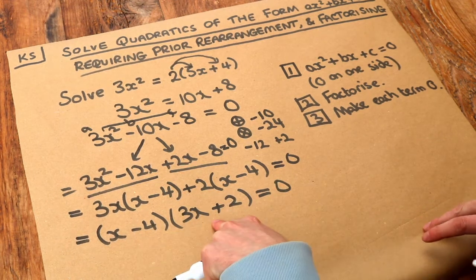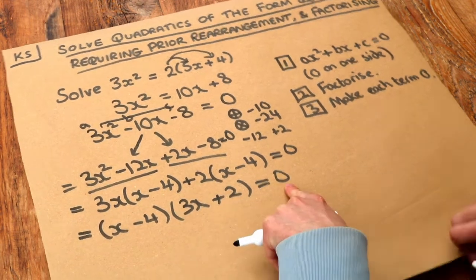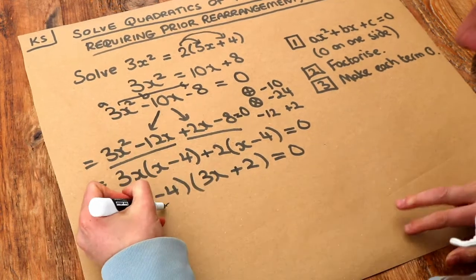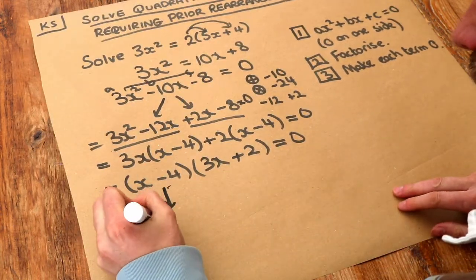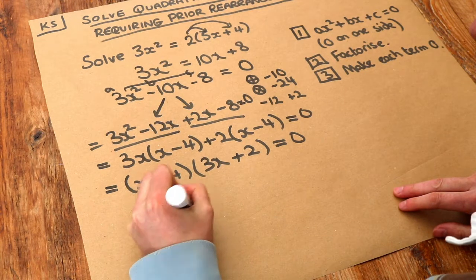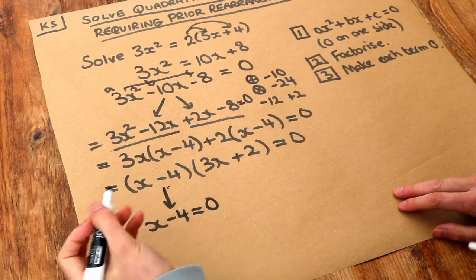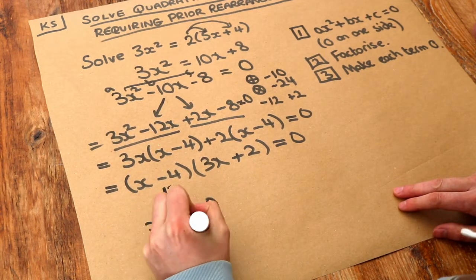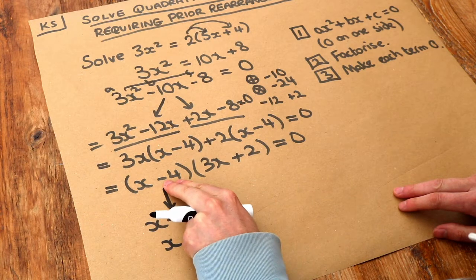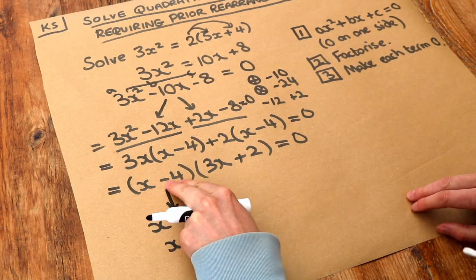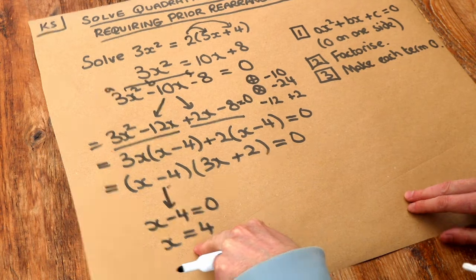And now we just have to make each of these terms 0. Because remember, if the product of two things is 0, then one of them has to be 0. So if the x minus 4 was 0, what minus 4 is 0? Well, it's 4. And do you remember, the quick way of doing it is you just negate that. So if it was negative, it becomes positive. If it was positive, it becomes negative. So that becomes plus 4 as a solution.